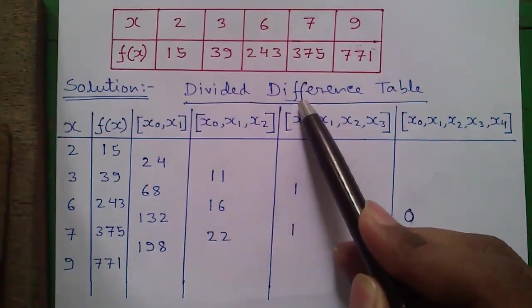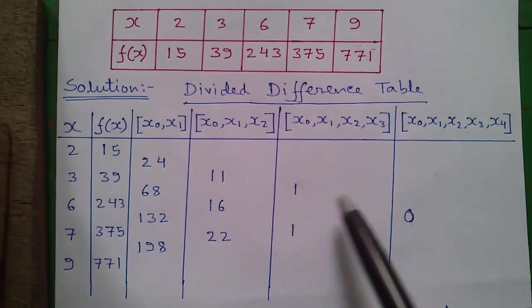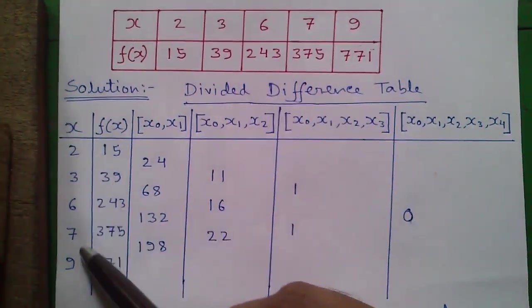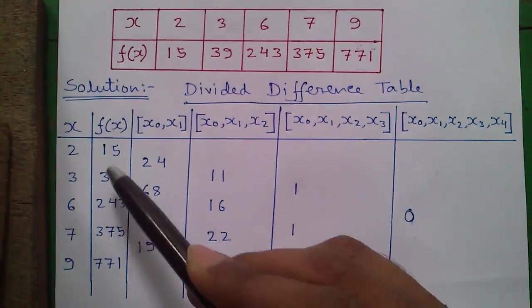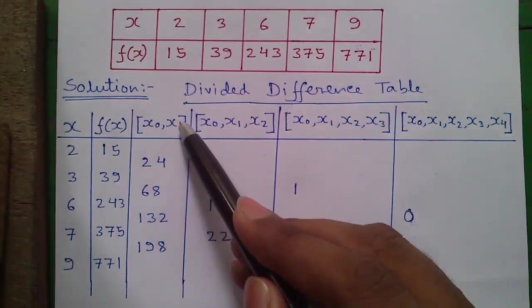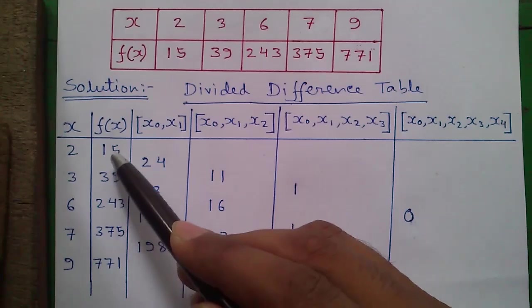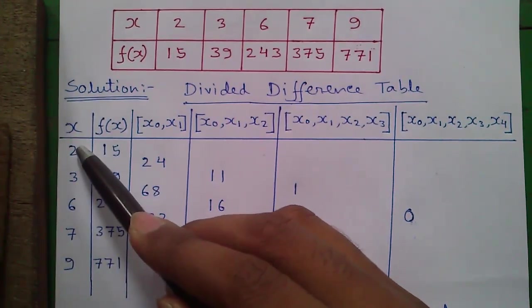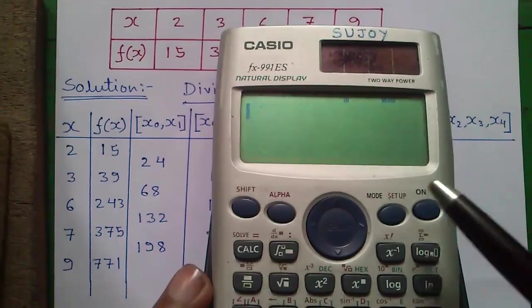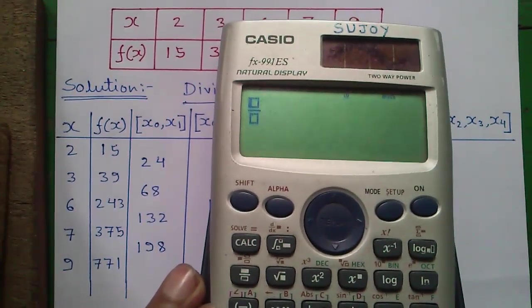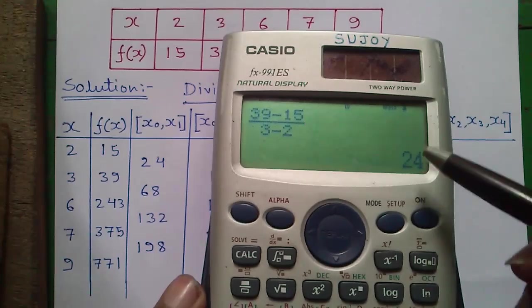So first we have to find out the divided difference table. For that, first construct the table and write all the x values vertically. Next, write all f of x values vertically next to it in the next column. The next column is called the x0, x1 column, and these numbers are obtained by this number minus this number divided by this number minus this number. For that, press the fraction button on the calculator and compute 39 minus 15 divided by 3 minus 2, which equals 24.